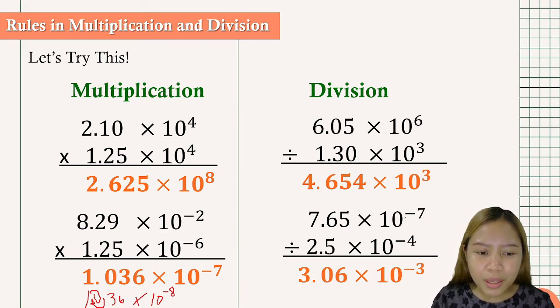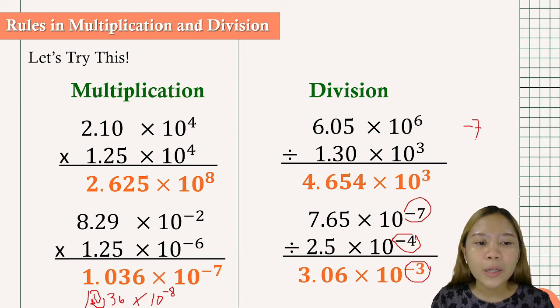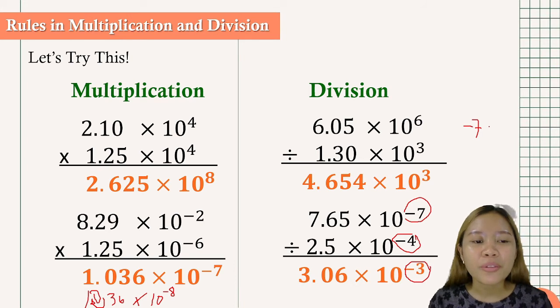Another question here about how negative 7 minus negative 4 became negative 3. Okay, so we are going to solve for it. We are going to apply the rules in integers. So we have negative 7 minus negative 4.